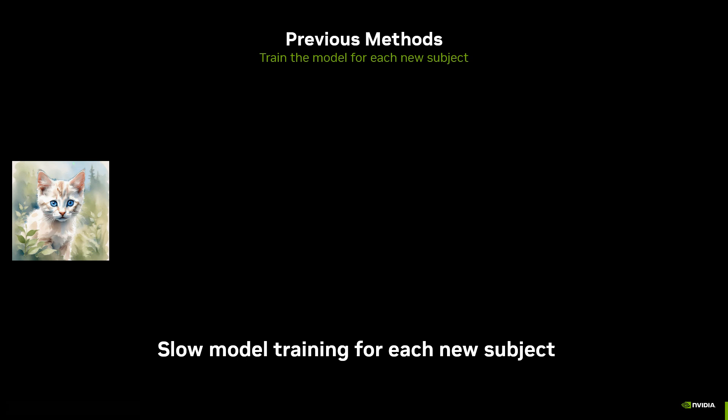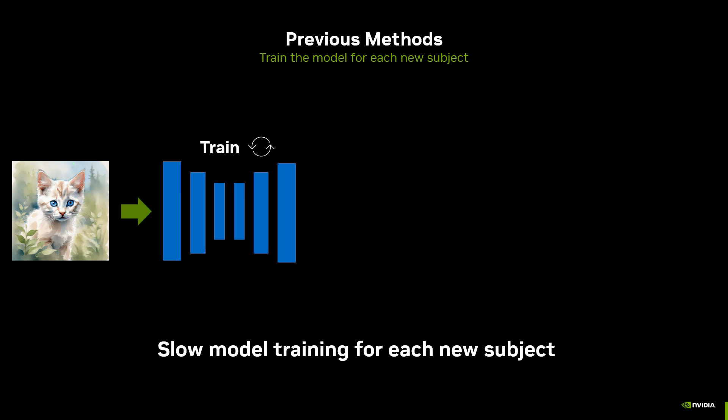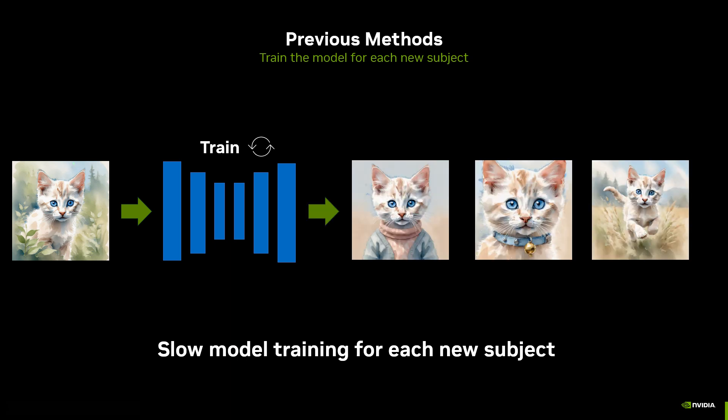Previous methods try solving these tasks with multiple steps. First, they generate an initial image. Then, they retrain the text-to-image model on the specific image. This is a slow process that can take many minutes. Finally, they generate more examples with a consistent subject.